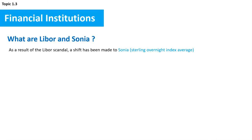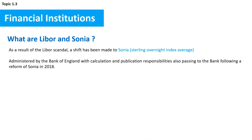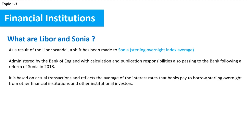As a result of the LIBOR scandal, a shift has been made to SONIA, which was established in 1997 and has been administered by the Bank of England since 2016, with calculation and publication responsibilities also passing to the bank following a reform of SONIA in 2018. SONIA is based on actual transactions and reflects the average of the interest rates that banks pay to borrow sterling overnight from other financial institutions and other institutional investors.